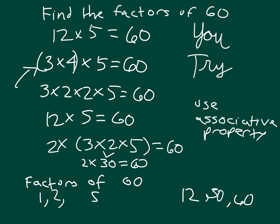So 2 goes with 30. Let's see what else we have. We'd have 3 going with 2 times 2 times 5. 2 times 2 is 4, times 5 is 20. 3 goes with 20. 4 goes with 3 times 5, which is 15.